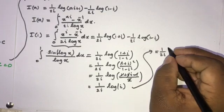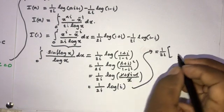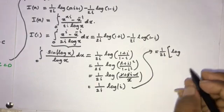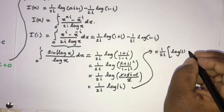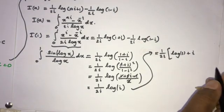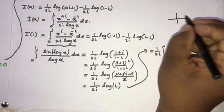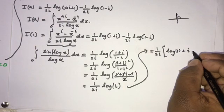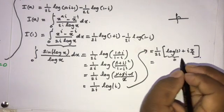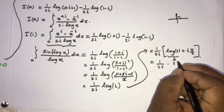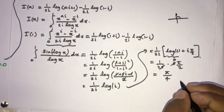We can write natural log of i using the complex logarithm: natural log of the absolute value plus i times the argument. The absolute value of i is 1, so natural log of 1 equals 0. The argument of i is pi over 2. So we have 1 over 2i times i times pi over 2. The i cancels, giving pi over 4.